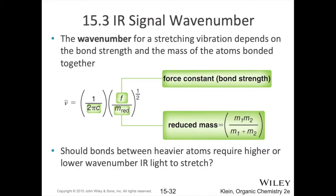For wave number, we tie this to the bond strength and the mass of the atoms involved. Bond strength is directly proportional to our wave number — the stronger the bond, the higher the wave number. The reduced mass is on the denominator, so it's inversely proportional to wave number. The reduced mass for a bond between two atoms is the product of those two atoms' masses divided by the sum of their masses. So generally, the heavier your atoms, the lower your wave number.